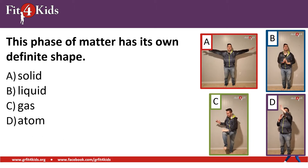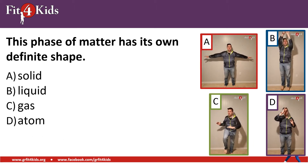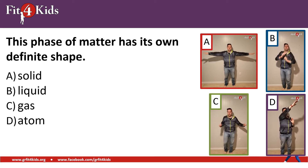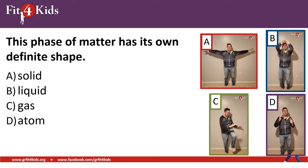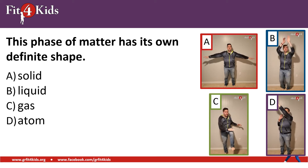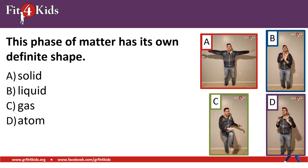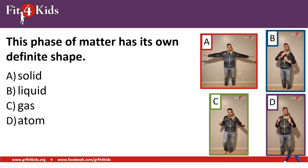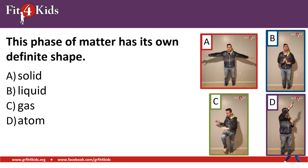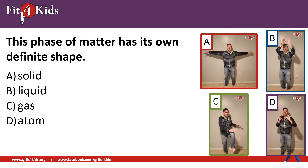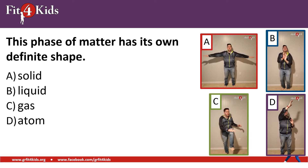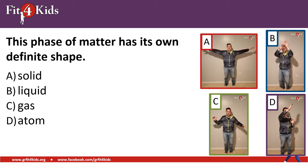This phase of matter has its own definite shape. A, solid; B, liquid; C, gas; D, atom. For this, you should be doing arm circles because a phase of matter with its own definite shape is a solid. A is the answer.